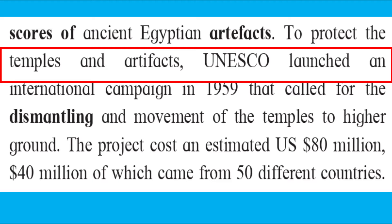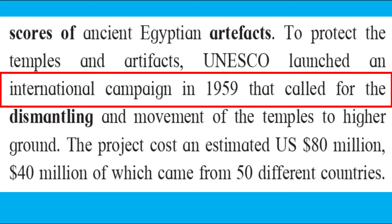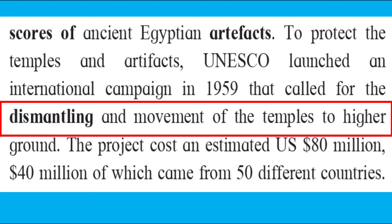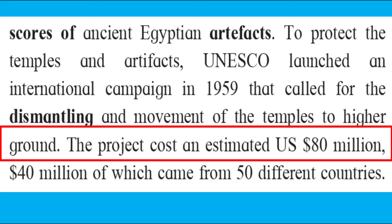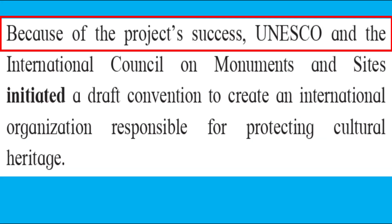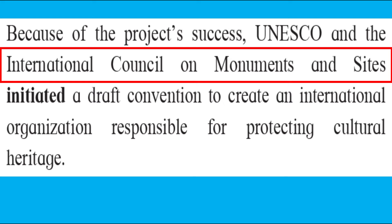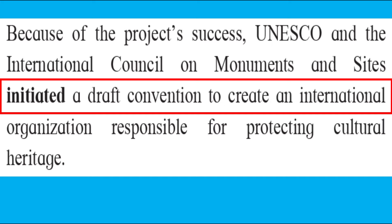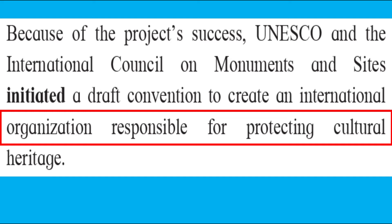To protect the temples and artifacts, UNESCO launched an international campaign in 1959 that called for the dismantling and movement of the temples to higher ground. The project cost an estimated 80 million US dollars, 40 million of which came from 50 different countries. Because of the project's success, UNESCO and the International Council on Monuments and Sites initiated a draft convention to create an international organization responsible for protecting cultural heritage.